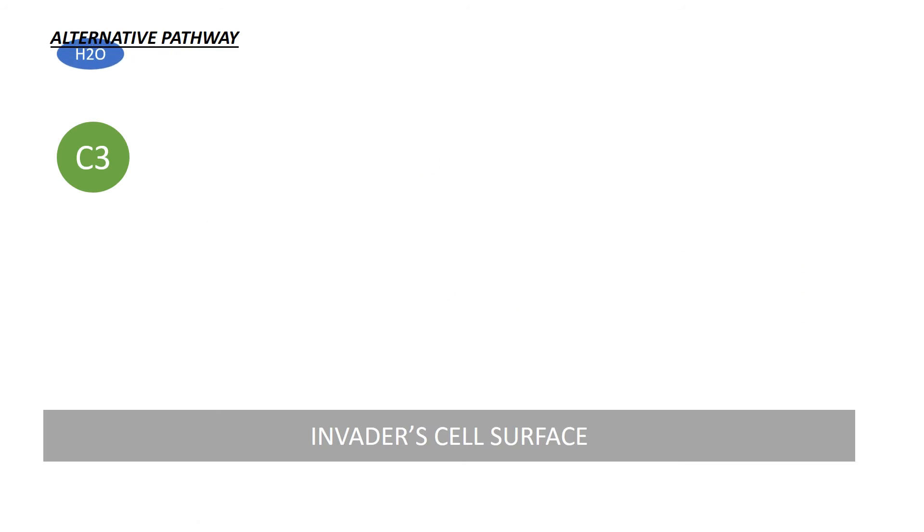It begins with spontaneous hydrolysis of C3. C3A is an anaphylotoxin and chemoattractant. C3B is very reactive and can bind to the invader's cell surface. If C3B cannot find a cell surface to bind within 60 microseconds, it is hydrolyzed.